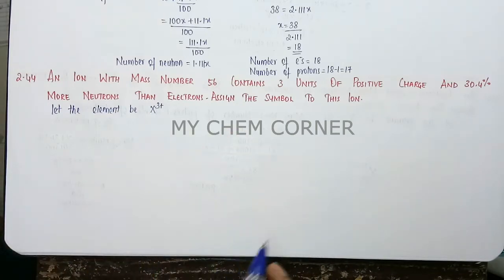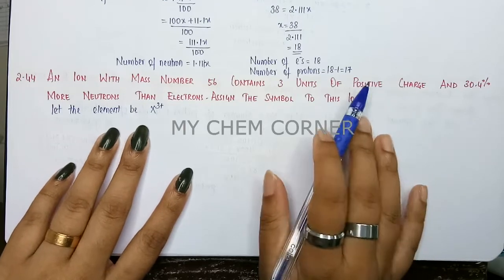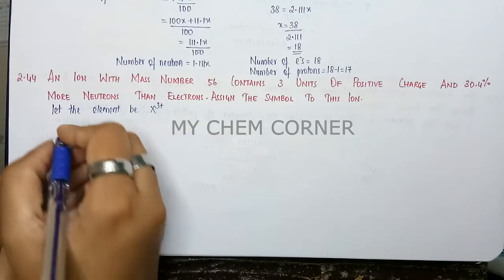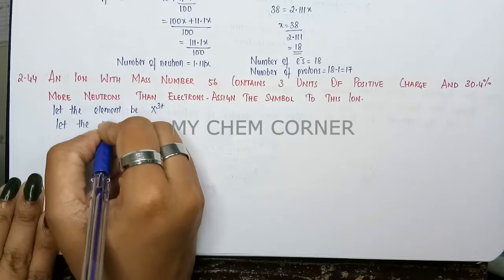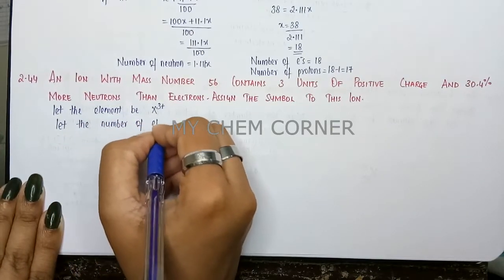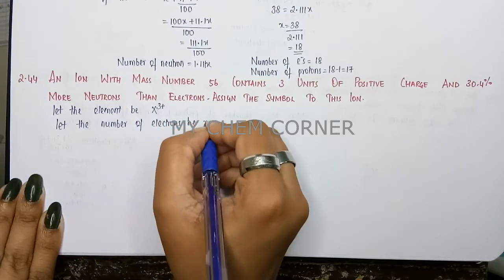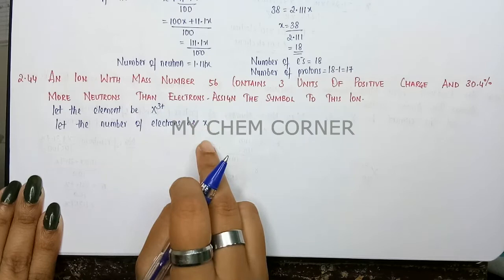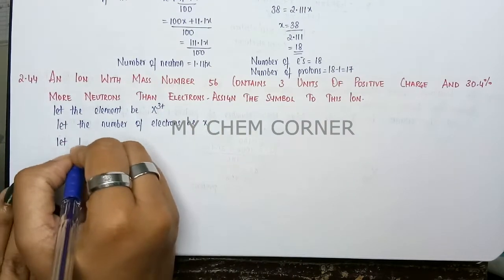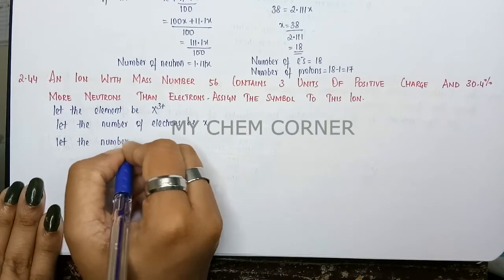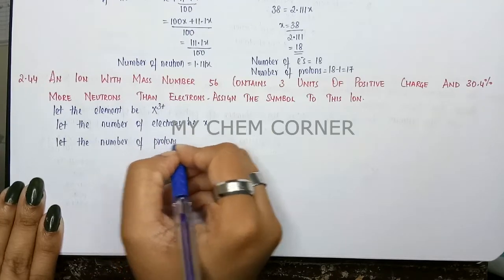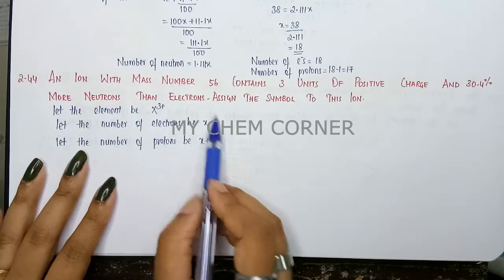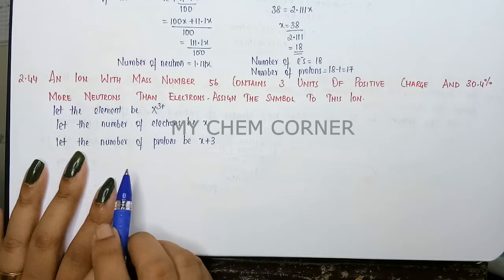Since there are three units of positive charge, the element has three fewer electrons than its proton count. Let the number of electrons be x. Since it is a positive ion, the element has lost that many electrons, so those will be added to the proton count. Therefore, let the number of protons be x plus 3, because that many electrons have gone out and that many fewer electrons remain compared to protons.